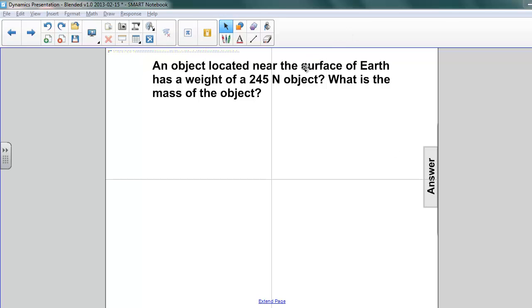We've got a few pieces of information here. The object is near the surface of the earth and the other part is that the weight of the object is 245 newtons. You're asked to find the mass.